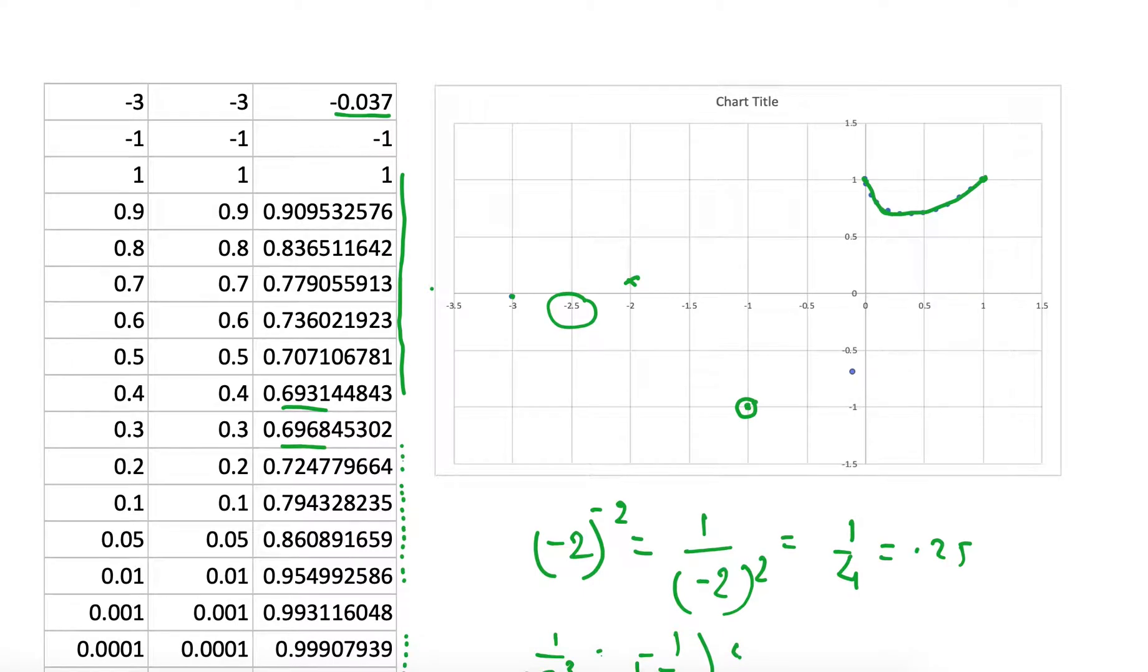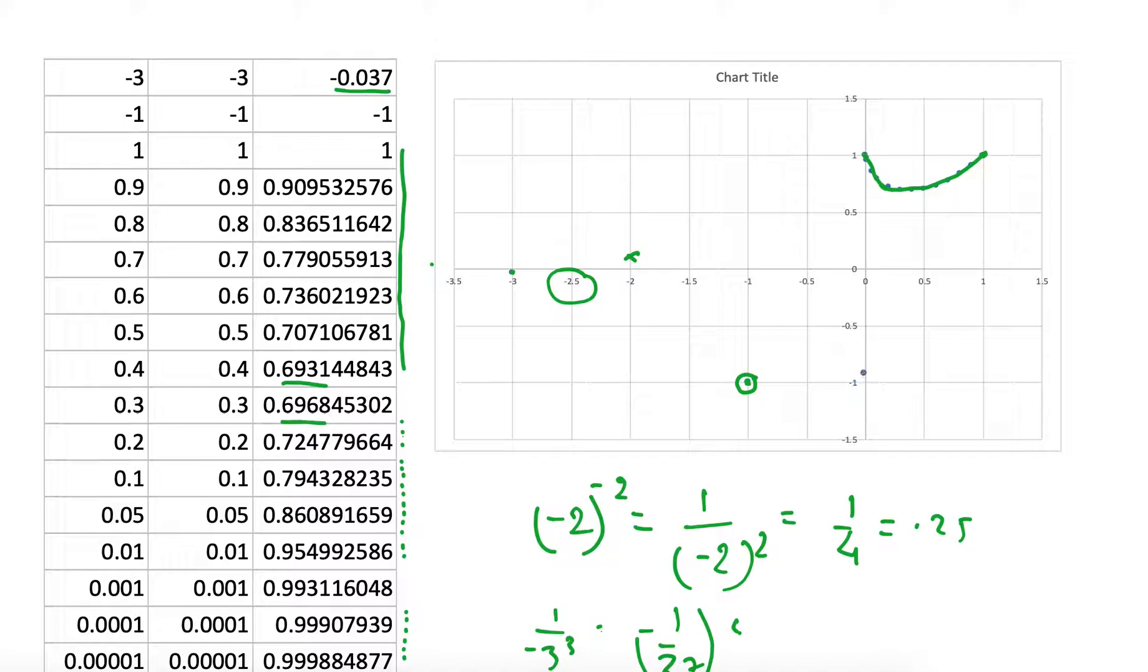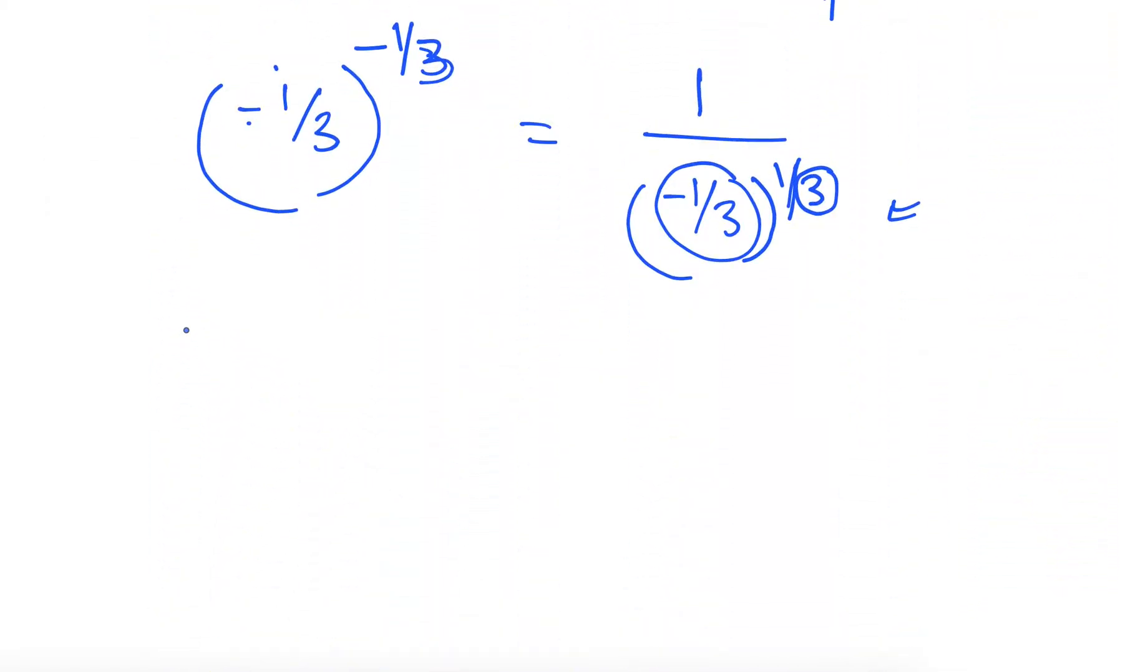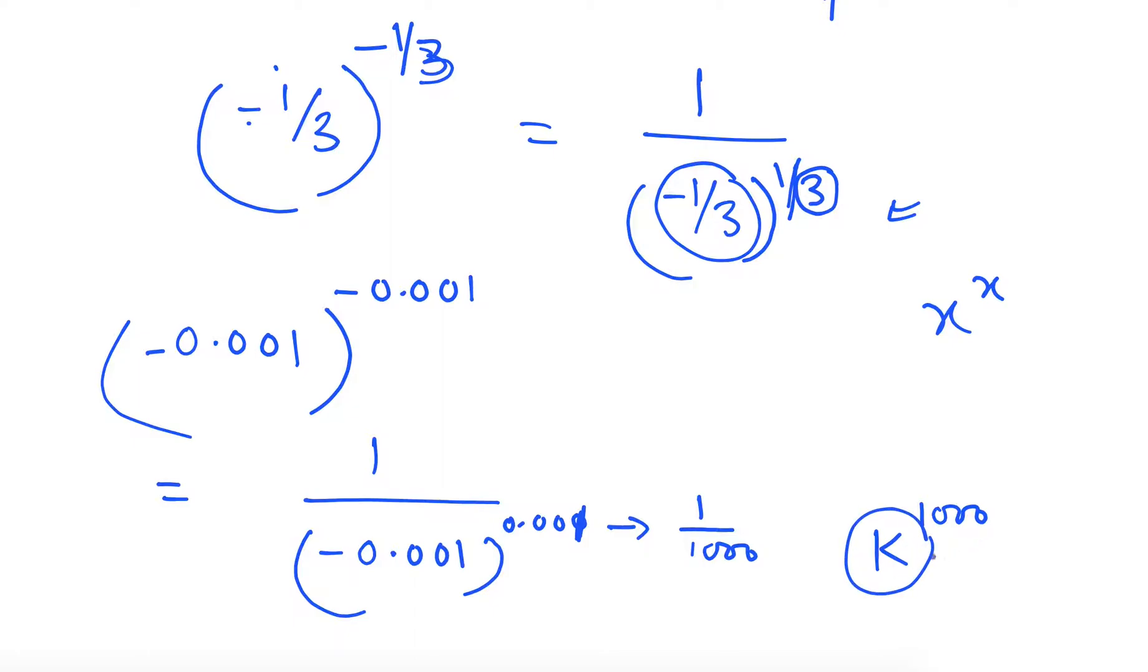So by same logic, if we try to go closer and closer to this 0 from negative side, from positive side, it was not a problem. So if we go from negative side, let's say we want to find minus 0.001 raised to the power minus 0.001. So we are interested in x to the power x all the time. So this is equivalent to 1 over minus 0.001 raised to the power 0.001. And this is nothing but 1 over 1 over 1000. So we have to find the number k such that if we multiply k thousand times, then it becomes minus some number, small number. But here again, we have even power. And we can only find complex or imaginary numbers, but not a real number.